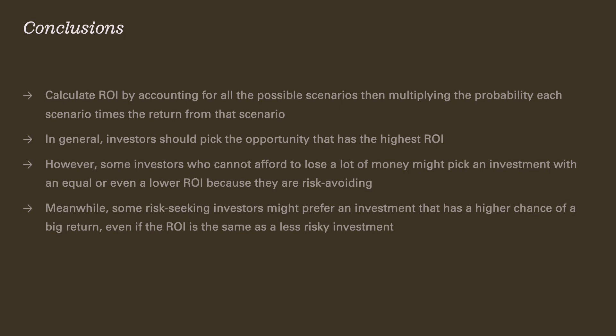In conclusion, we use the return on investment calculation to decide whether an investment is worth making — accounting for all possible scenarios and multiplying the probability of each scenario times the return from that scenario. In general, investors should pick the opportunity with the highest overall ROI. However, some investors can't afford to lose all their money, so they might pick an investment with a lower or equal ROI because they're risk-averse. Meanwhile, risk-loving investors might prefer an investment with a high chance of a big return — a swing-for-the-fences approach — even if the ROI equals a less risky investment. That is how we use the ROI calculation to understand whether an investment decision is wise and appropriate for the client.